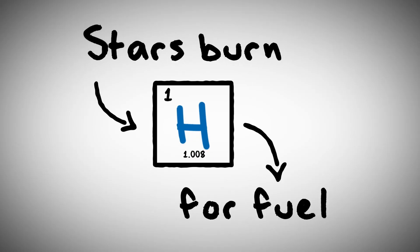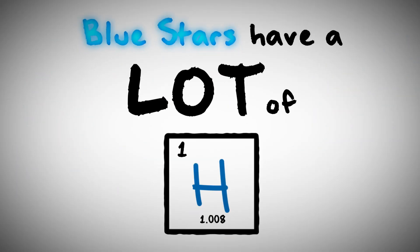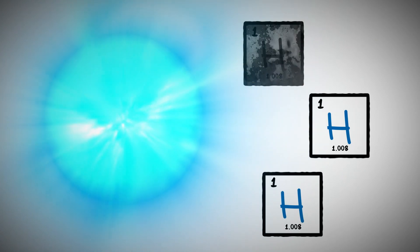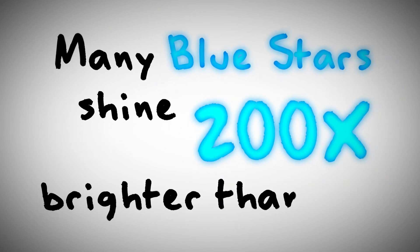Stars burn hydrogen for fuel, and blue stars have a lot of hydrogen. Our Sun has enough hydrogen to keep burning for around 10 billion years. Blue stars have much more than that, but they won't last as long because they burn through it so much faster. Many blue stars shine 200 times brighter than our Sun because they burn their fuel so quickly.